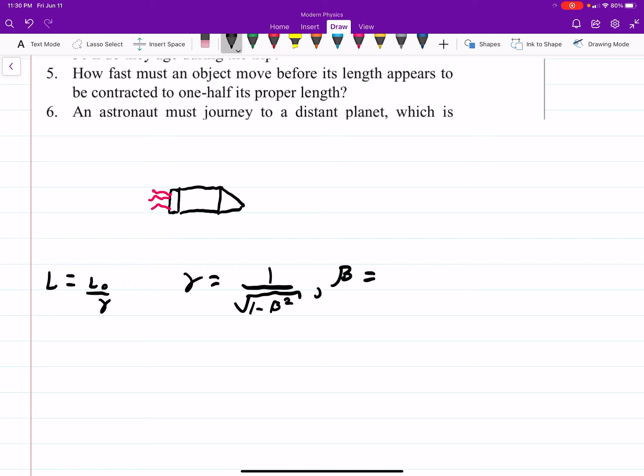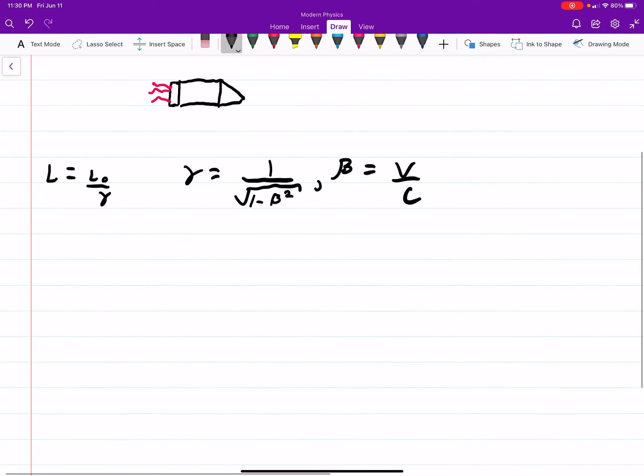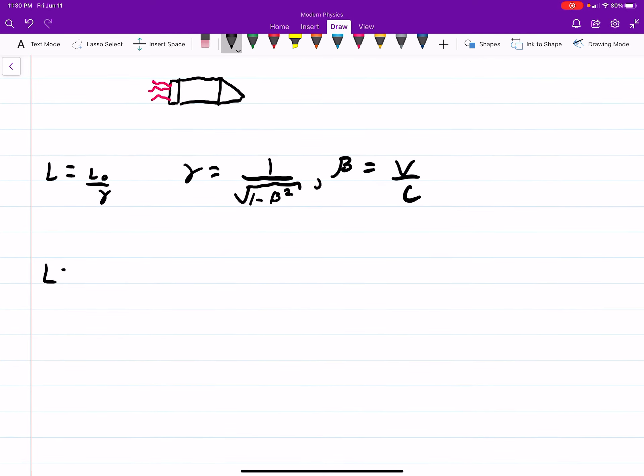And beta, so these are two separate things, is V over C. So really, L is equal to L-naught times the square root of 1 minus beta squared.